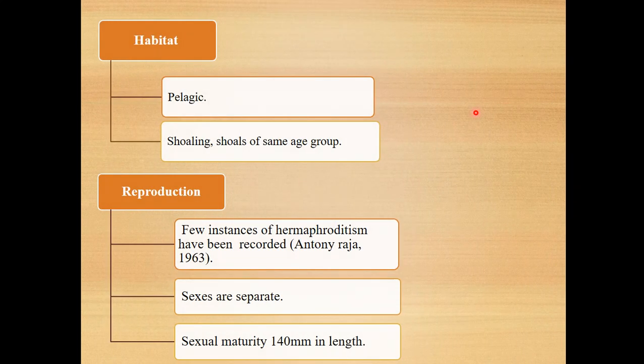Some scientists found that oil sardine feeds upon diatoms like Fragilaria. It mostly feeds upon crustaceans and copepods. The feeding habit varies depending upon the age and group of the fish.